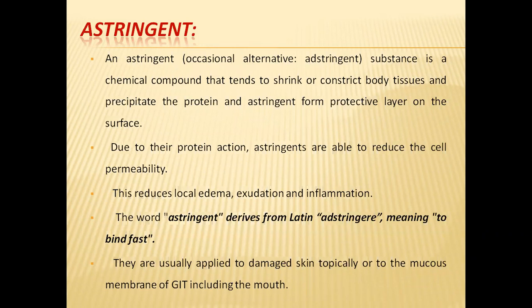The word 'astringent' is derived from Latin 'astringere,' meaning 'to bind fastly.' When we apply astringents, they decrease constriction of body tissues by binding proteins very tightly. They act as a protective layer on the skin by binding proteins. Protein precipitation refers to the spreading and constriction of body tissues — astringents reduce this by binding fastly to protein. They are usually applied to damaged skin topically.